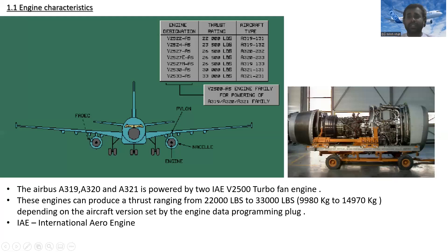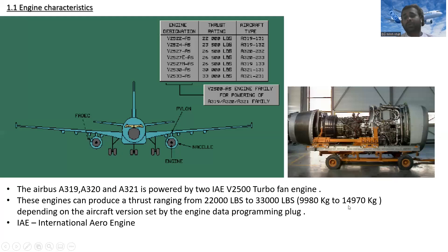The Airbus A319, A320, and A321 are each powered by two IAE V2500 turbofan engines. These engines can produce thrust ranging from 22,000 lbs to 33,000 lbs — that is approximately 9,980 kg to 14,970 kg — depending on the aircraft version, as set by the engine data programming plug. IAE stands for International Aero Engines.